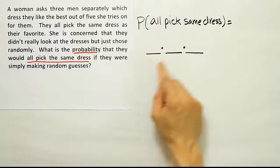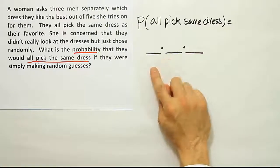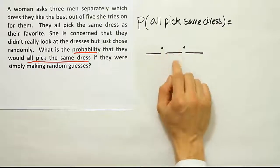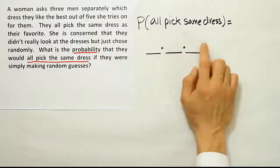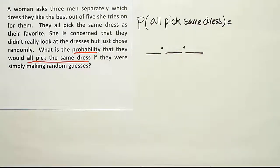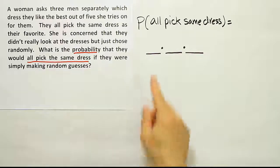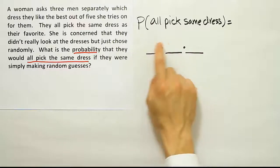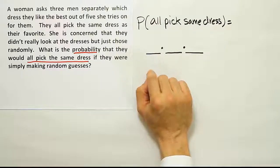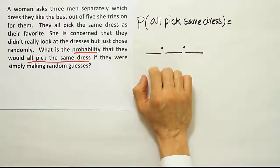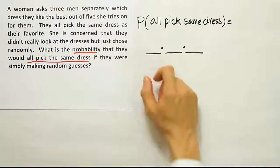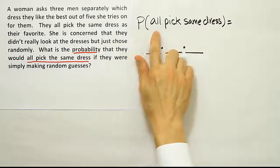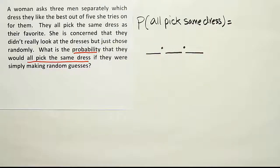If I knew what the first man picked, it'd be easy — the other guys just have to pick the same one, which would be one dress out of five. The next guy also has to pick that same dress, so it's one out of five again. But does it matter what the first guy picks? We could say it doesn't matter what he picks, but we can't just put one fifth there. A lot of people say there's one dress out of five possible options, so one fifth is the probability — but that assumes you know which dress they pick.